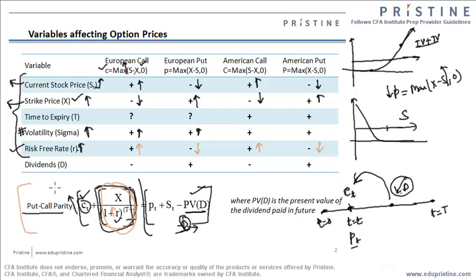Now let's move to the dividend part. We know that whenever dividends are being paid, the stock prices fall. So if the stock prices are falling with the increase in dividends, the call option will fall. The other way is directly this put-call parity. If the dividends are increasing, the value of the call is decreasing because this dividend is coming with a negative sign. If this dividend is increasing, the right-hand side will decrease, which means the call has to decrease. Similarly, if the dividend is increasing, the put option has to increase — there is a positive relationship between dividends and the put option.